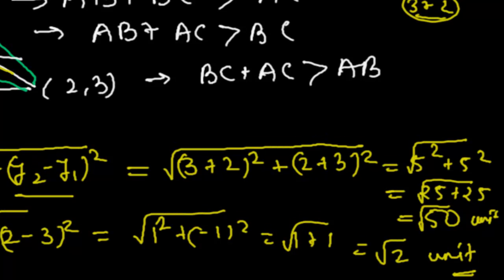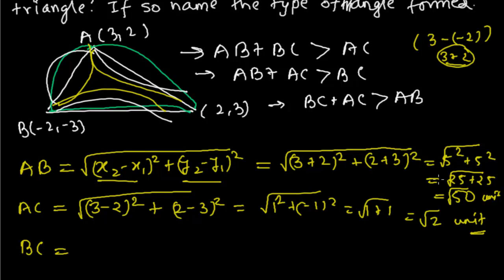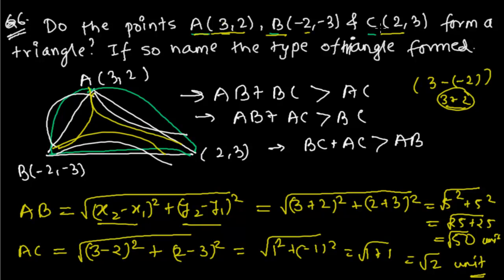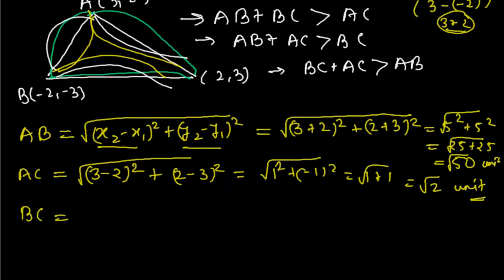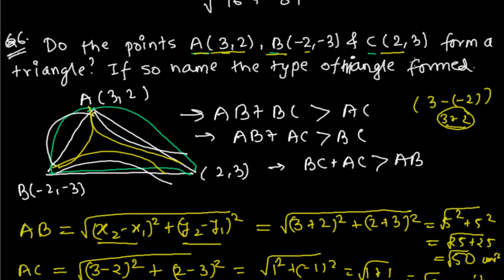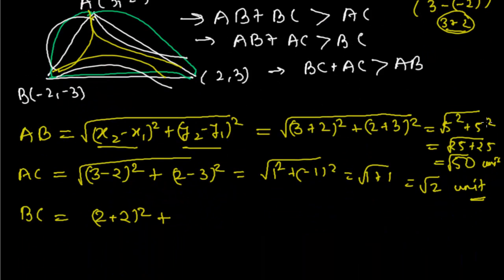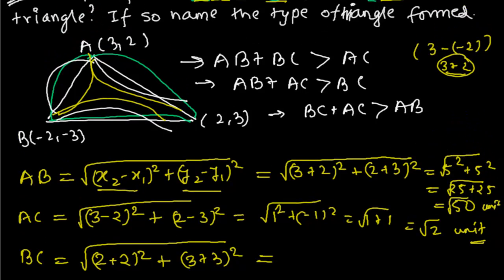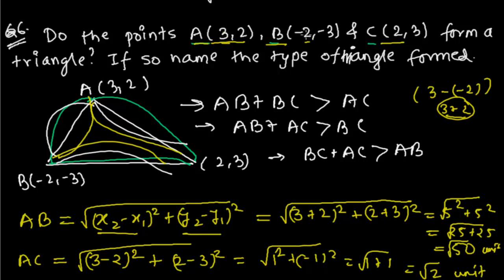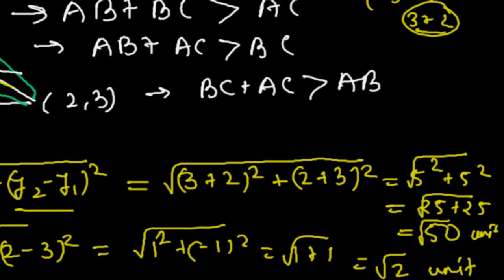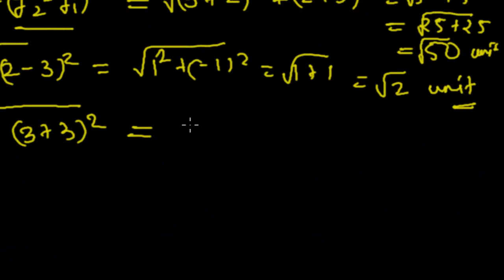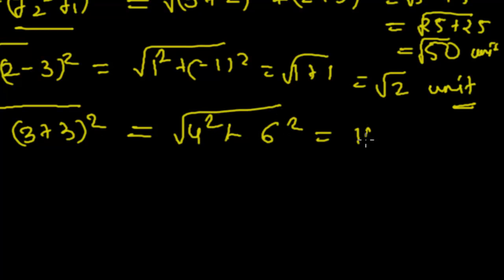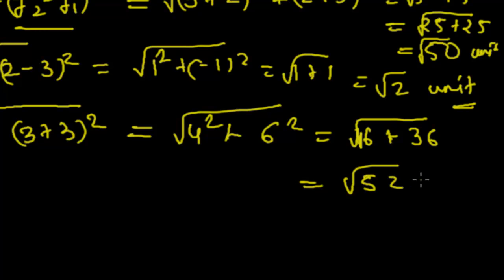Now let me find the distance BC. B is (-2,-3) and C is (2,3). Difference of x-coordinates: 2 minus (-2) = 4, and difference of y-coordinates: 3 minus (-3) = 6. So it is √(4² + 6²) = √(16 + 36) = √52 units.